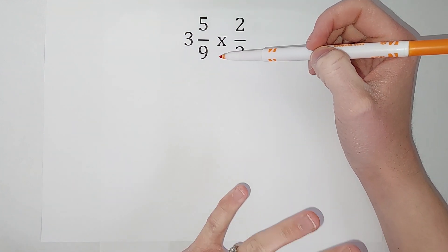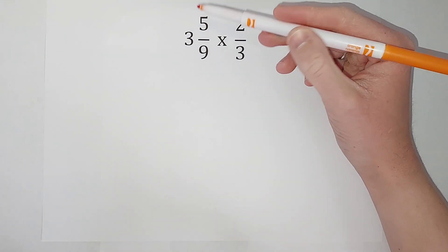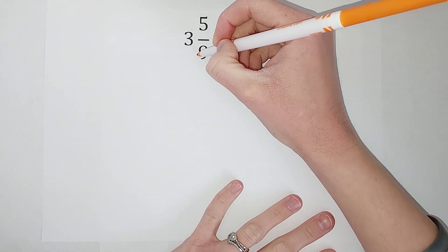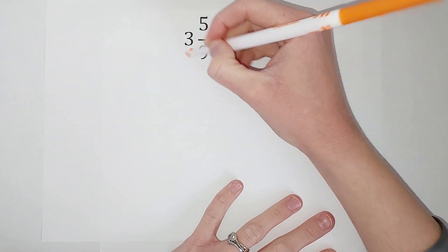So to do that, I will link a video in the corner with some more examples, but I'm also going to do it here. We take our denominator and multiply it by the big number.